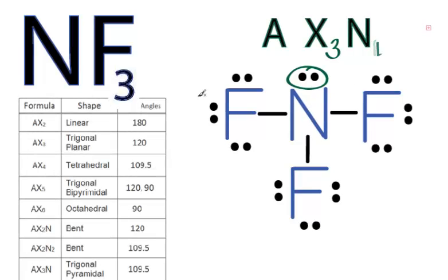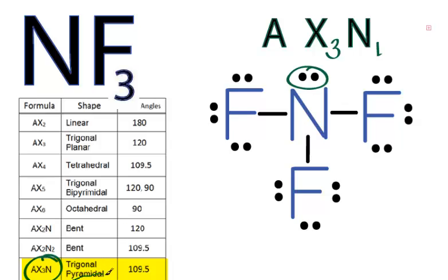You could have memorized that AX3N is a trigonal pyramidal molecular geometry, or if you had a table, you could look it up. On our table here, we have AX2, AX3, all the way down to AX6, AX2N, AX2N2, and there it is — AX3N. It is trigonal pyramidal, and the bond angles are about 109.5 degrees.